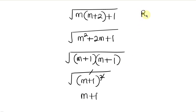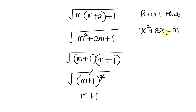Now recall from our substitution that we said let x squared plus 3x be equal to m. So wherever I see m I'm going to be putting x squared plus 3x. So I have m plus 1, which becomes x squared plus 3x plus 1.